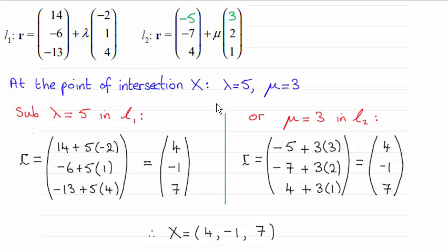It doesn't matter which one you put it into, you'll find that you get exactly the same position vector, 4, minus 1, 7.